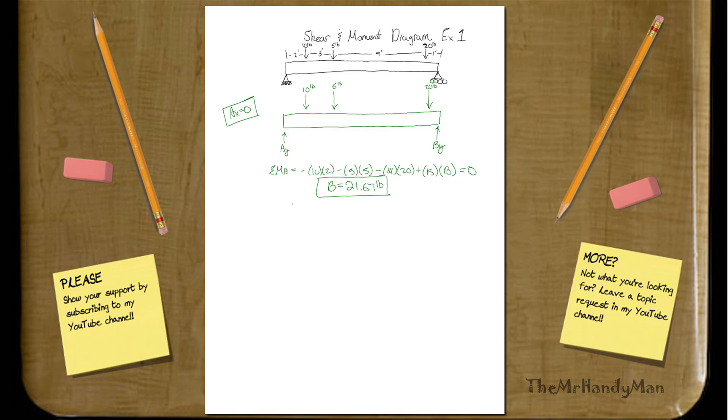Let's just solve sigma F of Y, will equal AY minus 10, minus 5, minus 20, plus 21.67. And with that, you're going to find that your AY, or A, will equal 13.33 pounds. Fairly simple.